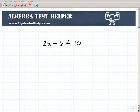If you're not familiar with linear inequalities, jump over to our site, AlgebraTestHelper.com. You can find a ton more information on it. So what do we do here with this problem? 2x minus 6 is less than or equal to 10.